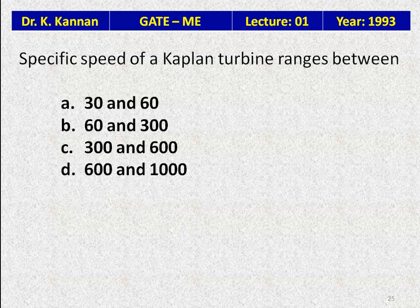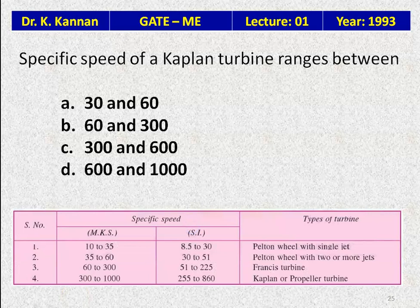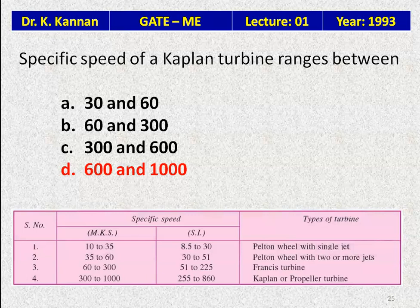Question 24: The specific speed of a Kaplan turbine is in the range — 30 to 60; 60 to 300; 300 to 600; or 600 to 1000. Looking at the specific speed table: Pelton wheel 8.5 to 30, Pelton with two or more jets 30 to 51, Francis turbine 51 to 225, Kaplan turbine 300 to 860 or 300 to 1000. The answer is D — 600 to 1000. Thank you, we will meet in the next lecture.